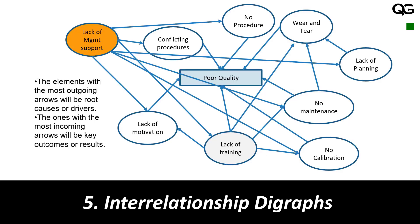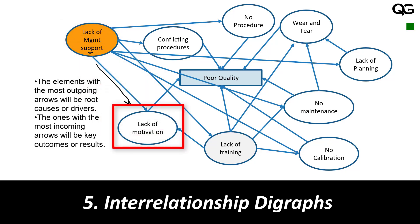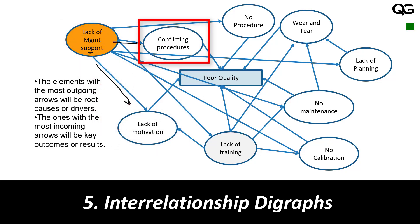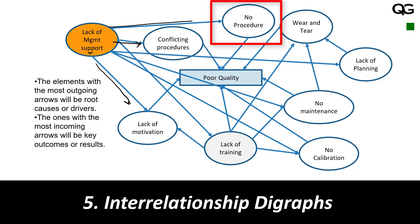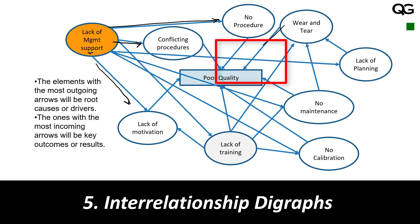Here, I have taken only the selective part of that fishbone diagram. You can see lack of management support leading to lack of motivation, conflicting procedures, no procedures, and wear and tear leading to poor quality. All those components are connected together by arrows, and these arrows show the cause and effect — the cause is the place from which the arrow starts, and the effect is the point at which the arrow ends.